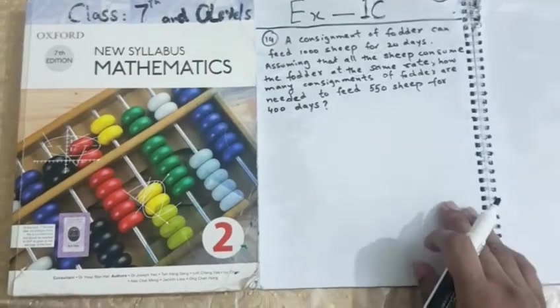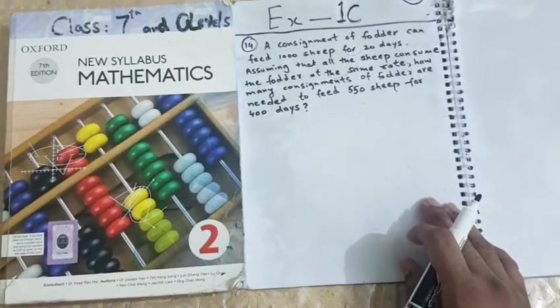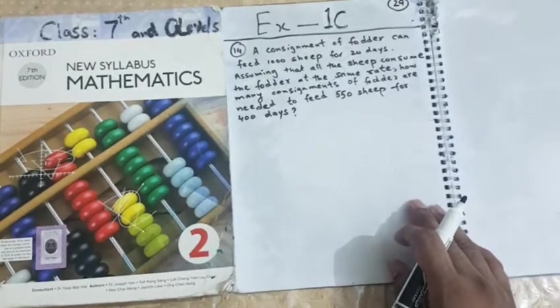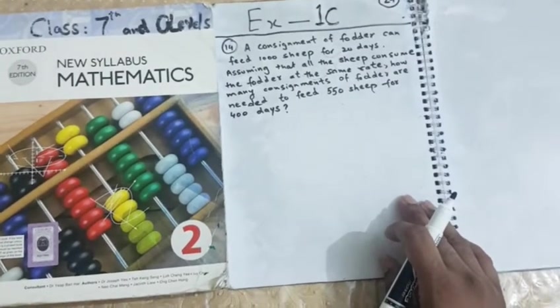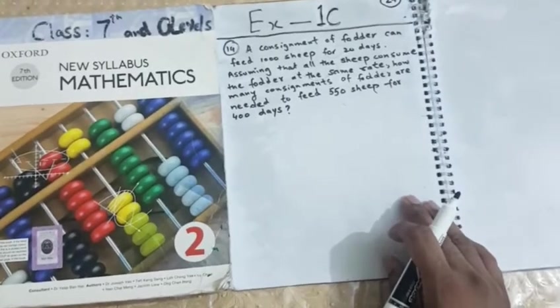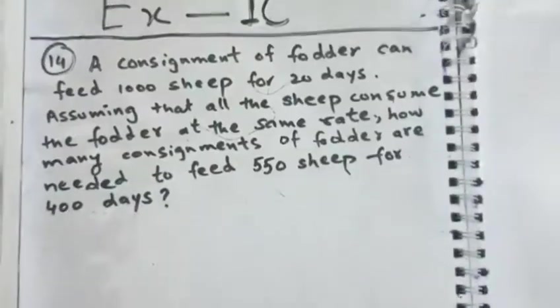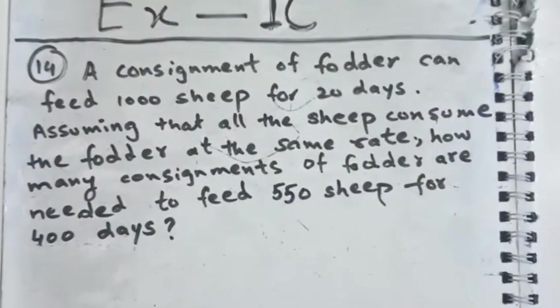Hello, Asalaamu alaikum students of class 7. This is mathematics D2 series exercise 1c book page number 29. If you have the book available nearby, you can open the book page number 29 and you can read the question number 14 carefully. Otherwise, I shall zoom the question. You can stop the video here and you can read this question carefully.